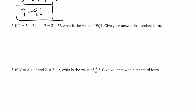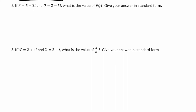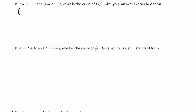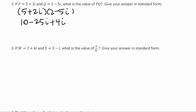If p is equal to 5 plus 2i and q is 2 minus 5i, what's p times q? We're going to do 5 times 2, 5 times negative 5i, 2i times 2, and 2i times negative 5i would be negative 10 times i squared. But we know that i squared is negative 1, so negative 10 times negative 1 would be positive 10. So we're going to get 20 minus 21i.